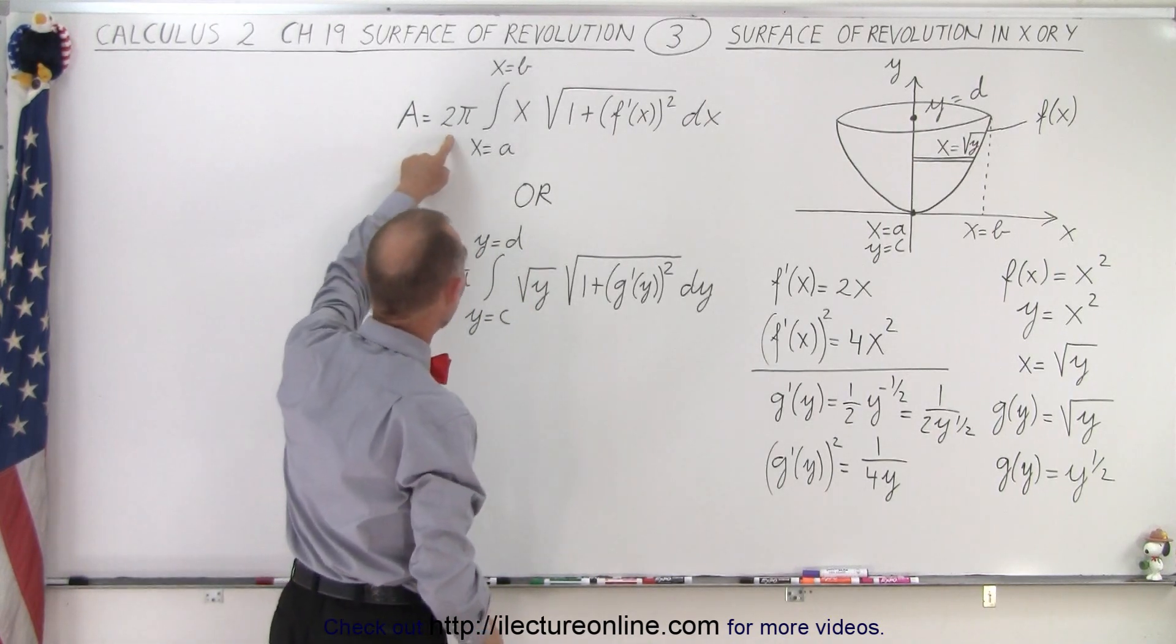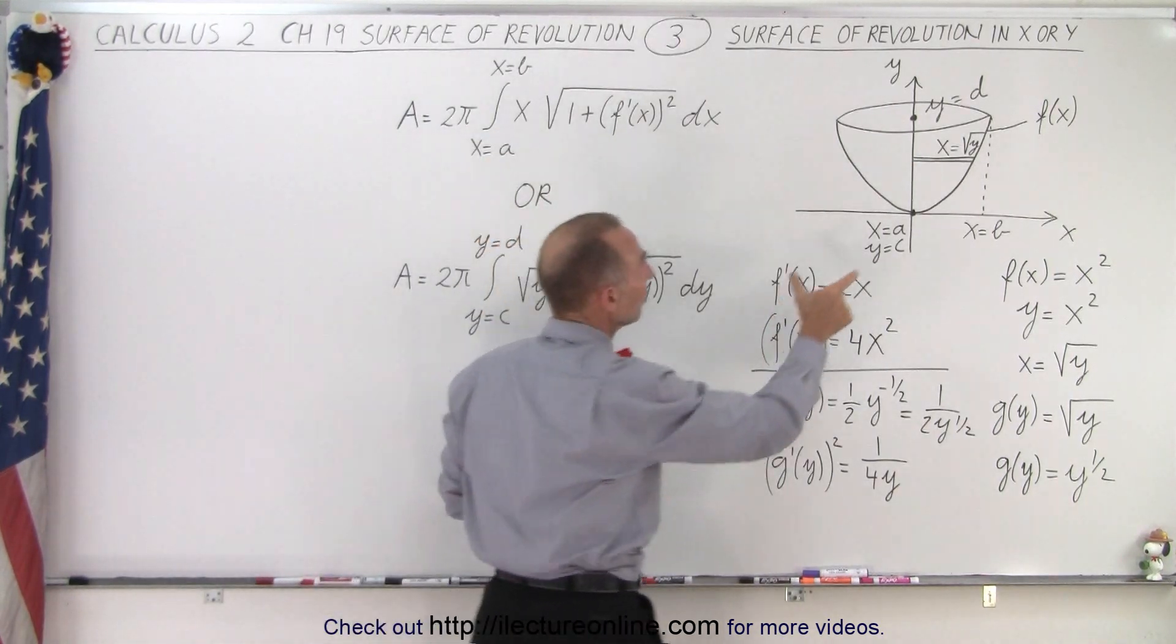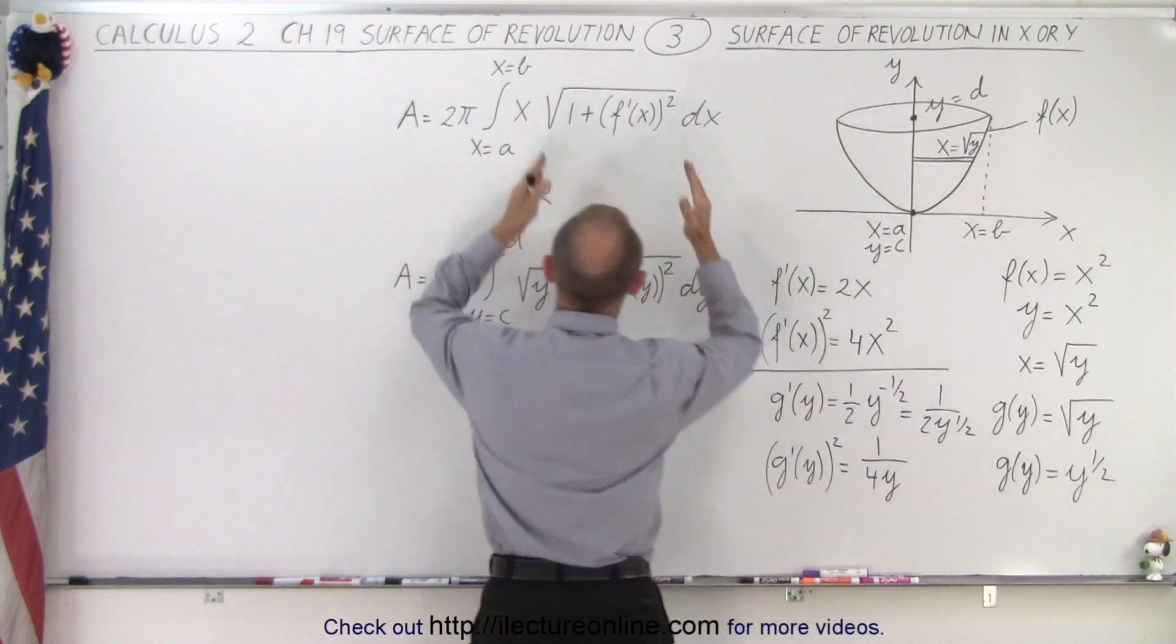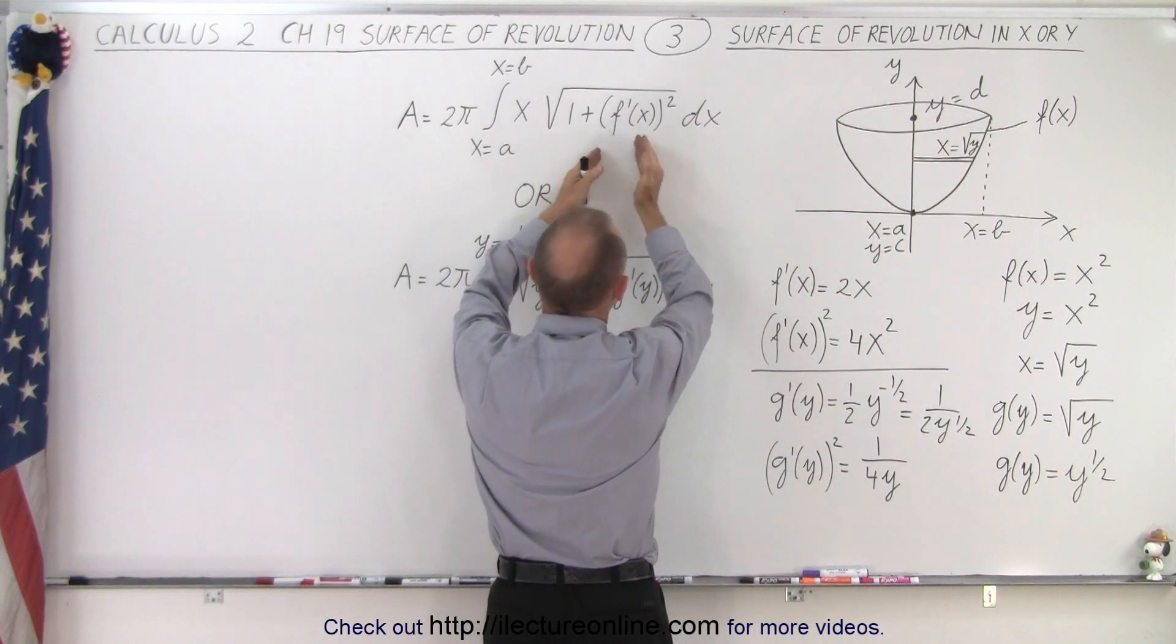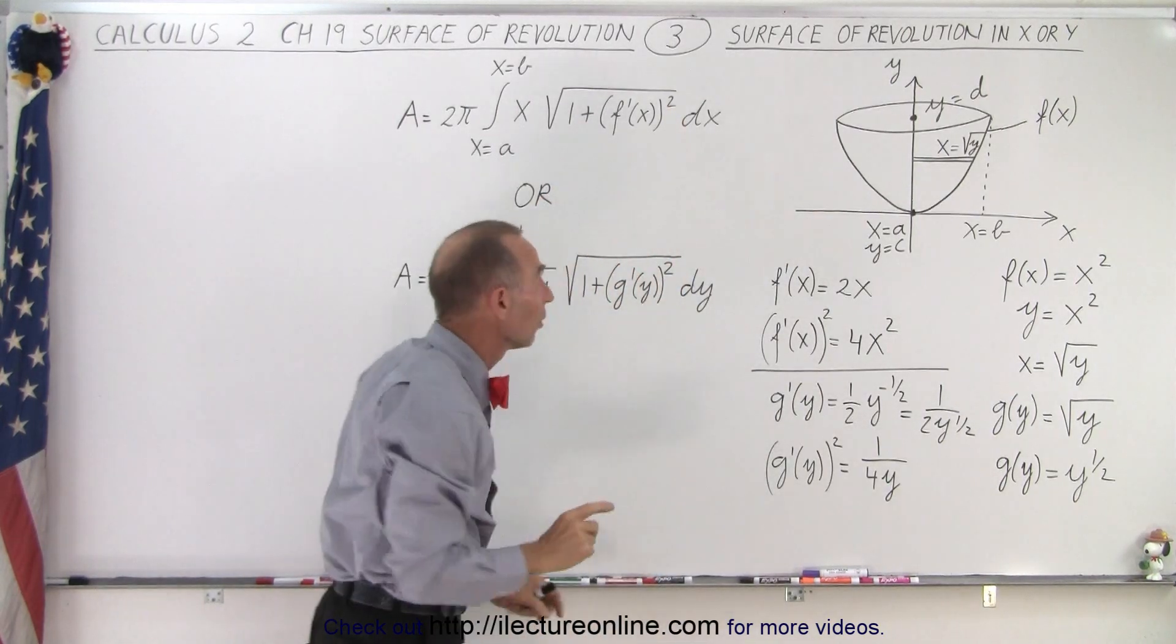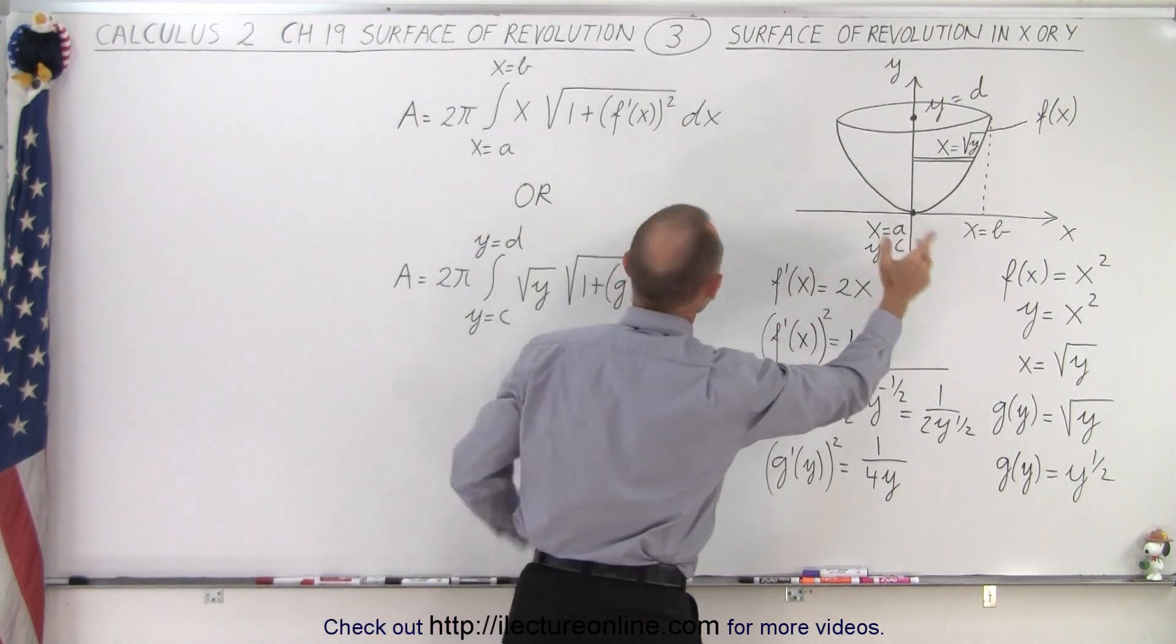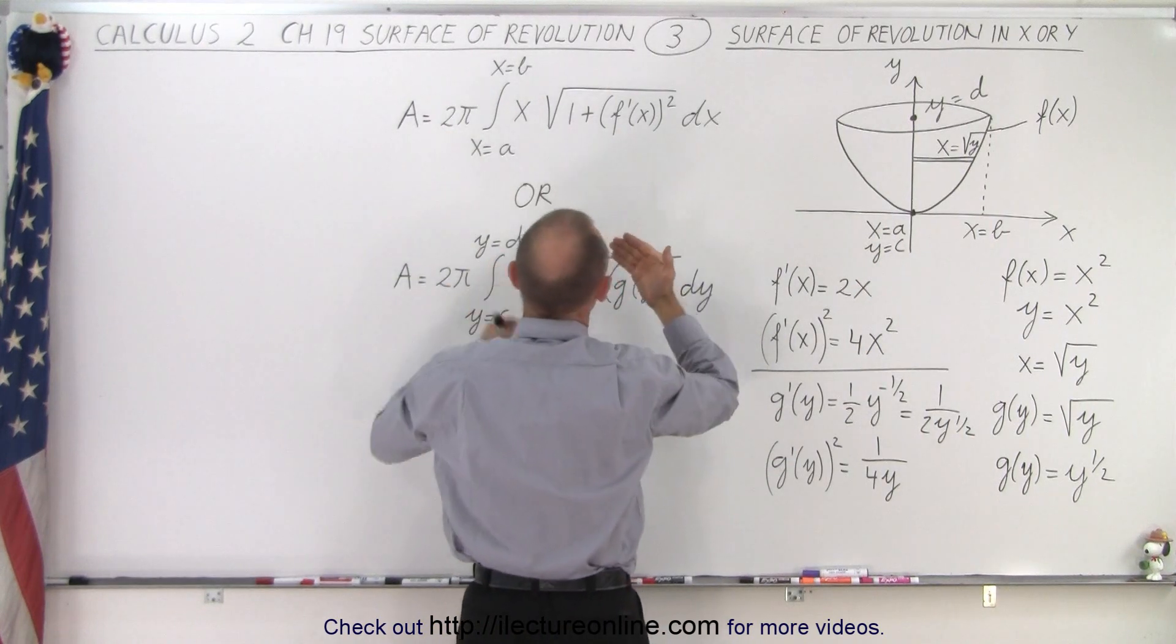We can say that the area is 2π times the radius, where the radius in this case is x, times the square root of 1 plus the derivative of the function f(x) squared times dx, because we're going to use the x method, so to speak, to solve it.